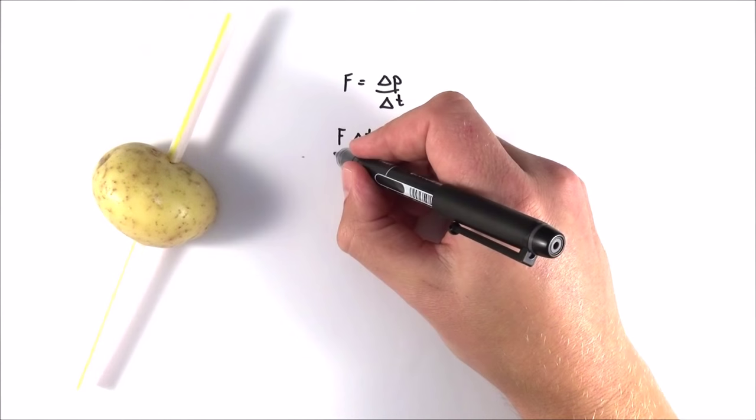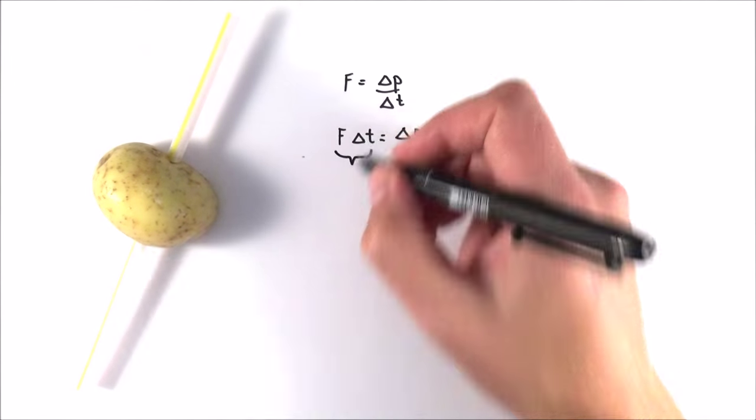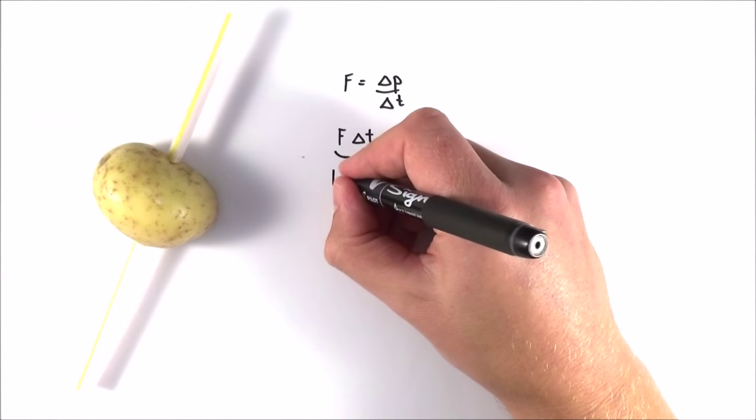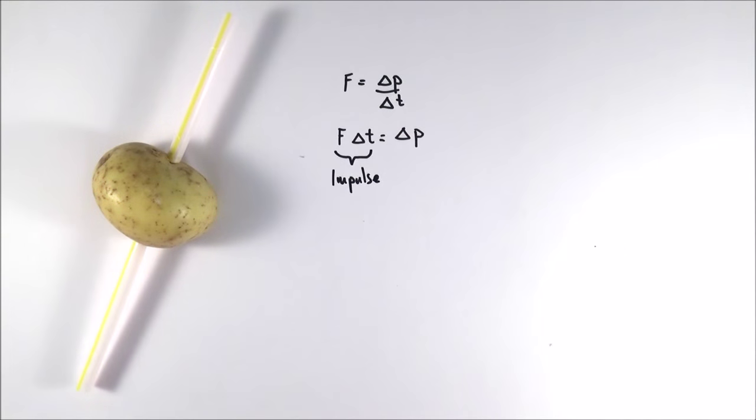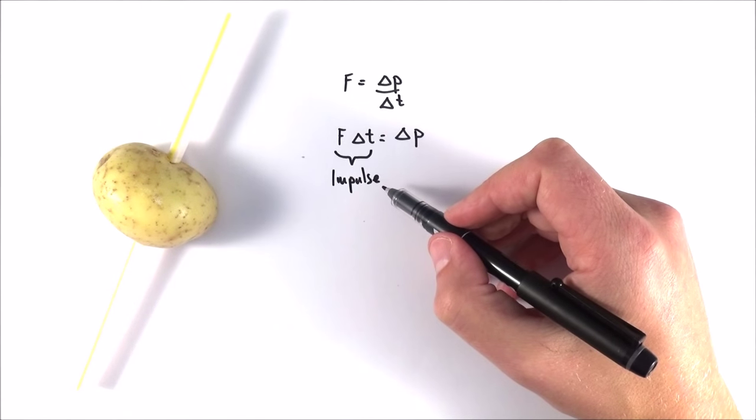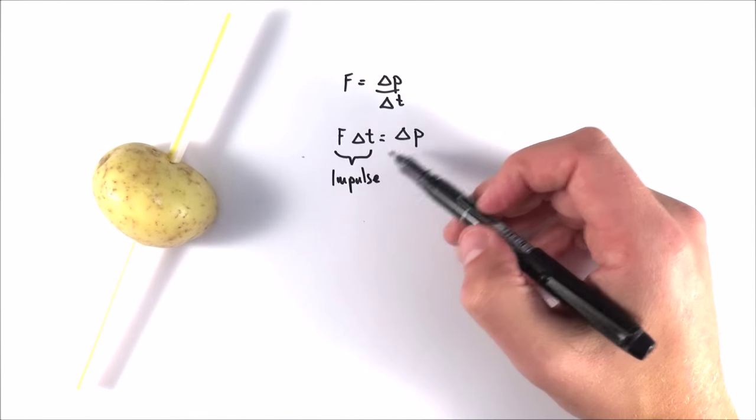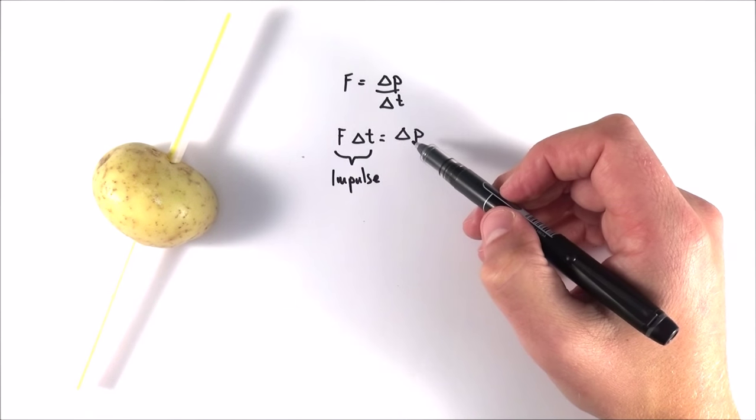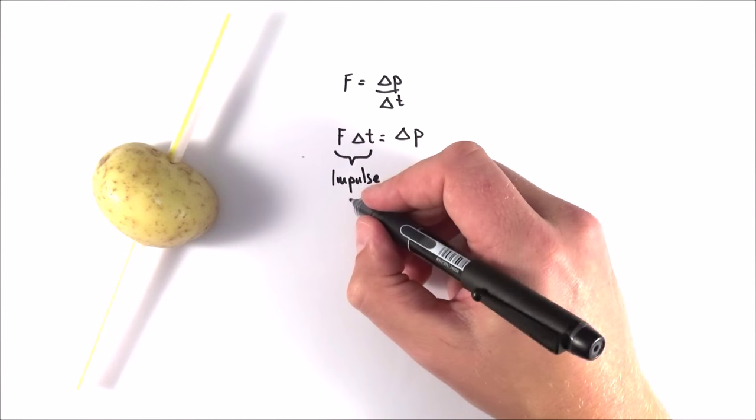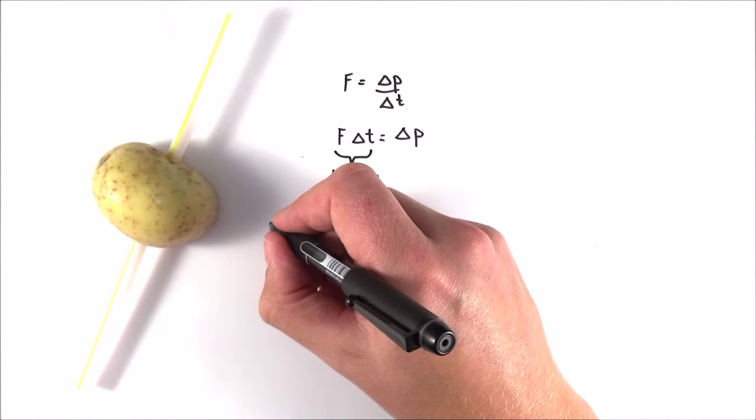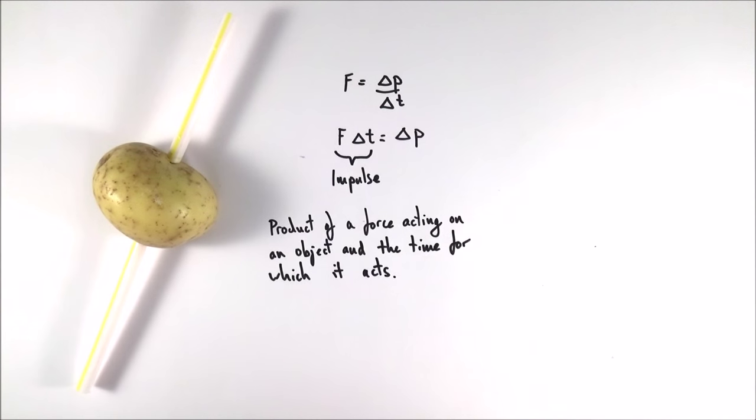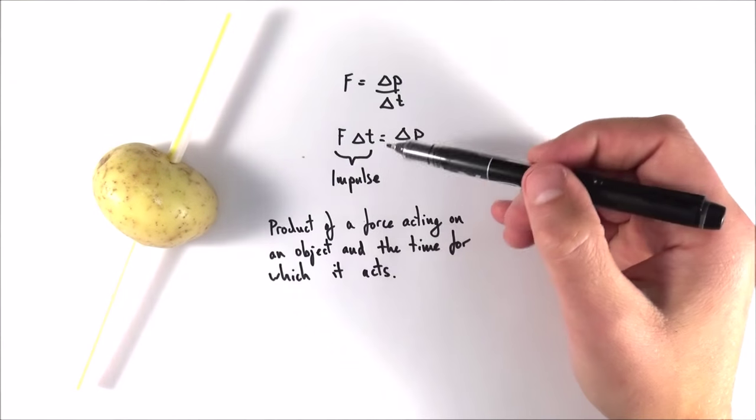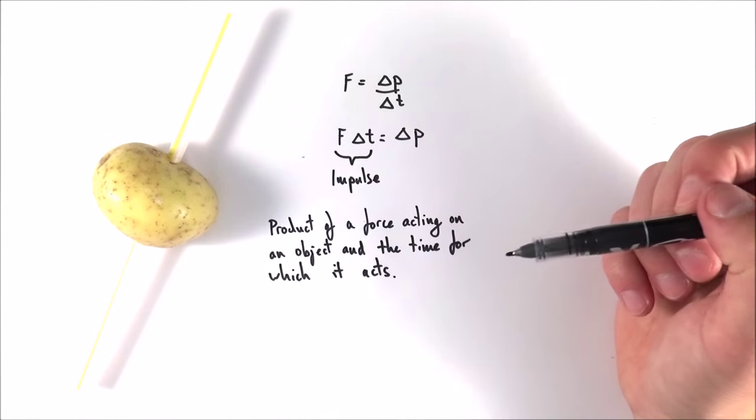And actually there's a special name for this. If we look at the force multiplied by the time for which it acts, this is what we call the impulse. This impulse is basically when you have an external force acting on something and the momentum of the object changes. We can define the impulse as the product of a force acting on an object and the time for which it acts, and this basically gives rise to the change in momentum of that object.